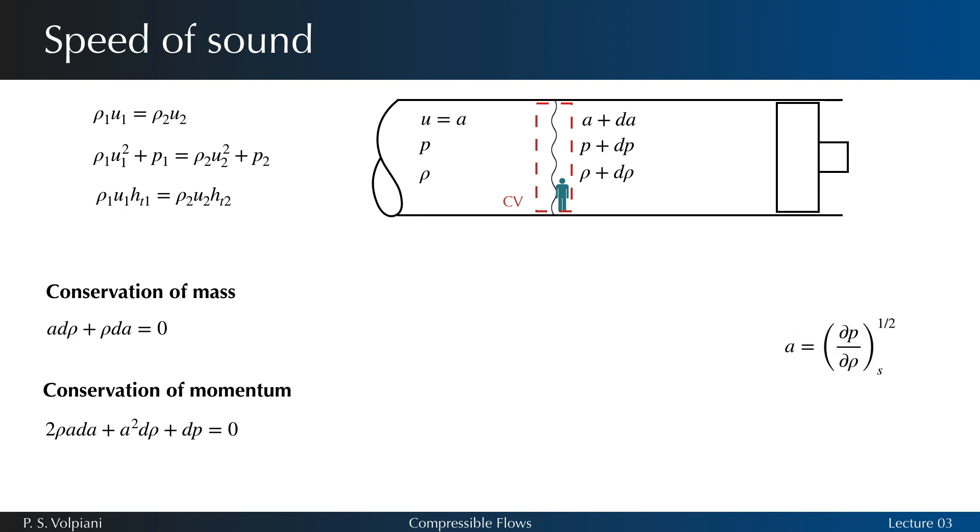Thus, the speed of sound is given by the square root of partial p partial rho at constant s. We saw in the first lecture that for an isentropic flow, p equals a constant times rho to the power of gamma. Then, partial p partial rho at constant s is equal to gamma p over rho. And finally, using the equation of state of a perfect gas, we obtain that the sound speed a equals the square root of gamma rt. Thus, the speed of sound in a perfect gas depends only on the temperature of the gas.